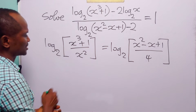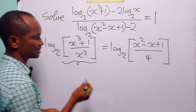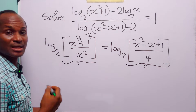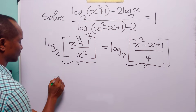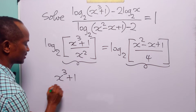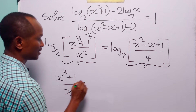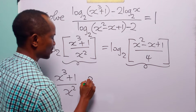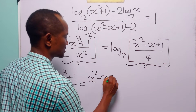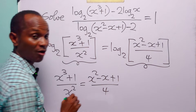Since log to base 2 of this quantity equals log to base 2 of that quantity, that simply means that x cubed plus 1 divided by x squared must be equal to x squared minus x plus 1 divided by 4.